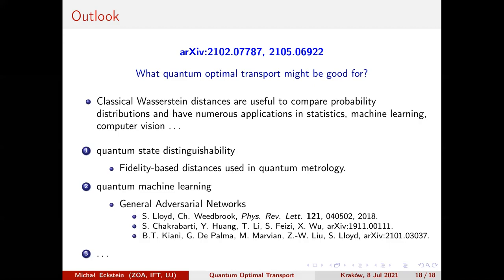One more comment: this quantum optimal transport problem is an SDP problem. The set of states with fixed marginals is described by semidefinite constraints, so it follows from general results. In principle you can use SDP duality — and yes, we do have the dual formulation. We actually needed to go through the dual to prove the triangle inequality for qubits, which was fairly tricky. We have the general dual formulation and for qubits we used it to prove the triangle inequality.